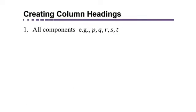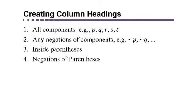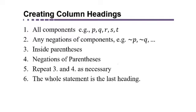One of the tricky parts for constructing a truth table is getting the column headings right. So you're going to need one column heading for each one of your components, the different letters. So you're going to need one for P, Q, R, S, T, whatever letters you have. You need one for each of those. Then you're going to list any negations of any components. Then you're going to list whatever occurs inside of any parentheses. Then any negations of parentheses and repeat steps three and four as necessary going from left to right. The whole statement is the last heading.